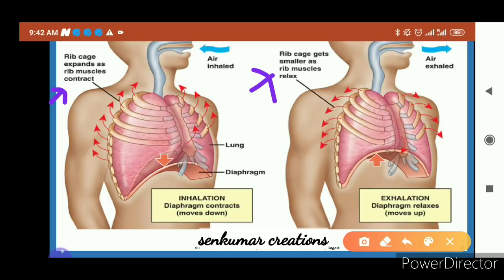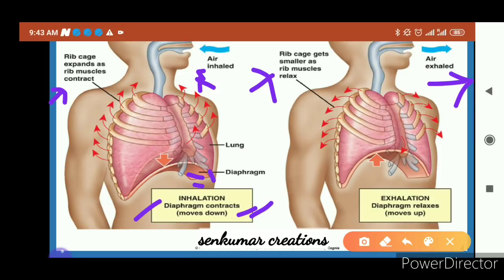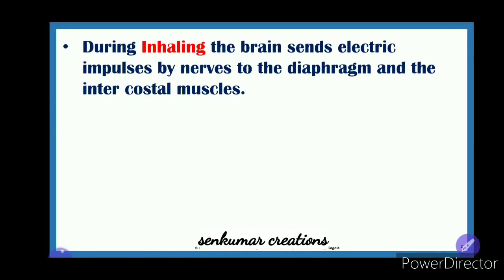During inhalation, the ribcage expands and the muscles contract. During exhalation, the ribcage gets smaller as the muscles relax. The diaphragm contracts and moves down during the inhaling process, but during the exhaling process the diaphragm relaxes and moves upward. This is the main difference between the inhale and exhale process.